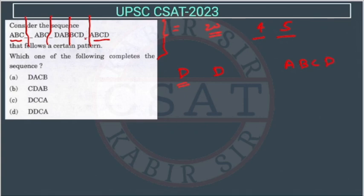Now this d will move in the second stage — d will move this side. So this will become d, a, b, c. Now c will move this side, so this will become c, d, a, b like this. So this kind of series is what's happening here.